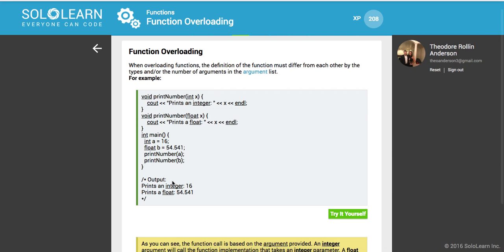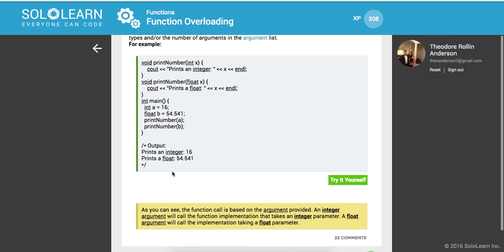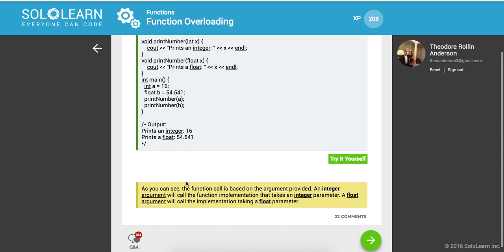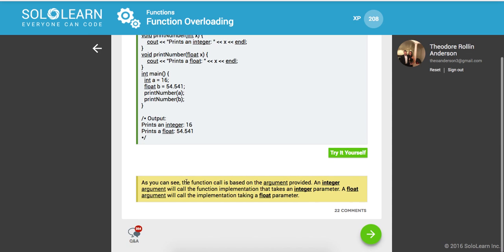So again, just reinforcing that muscle memory. And as you can see, the function call is based on the argument provided. An integer argument will call the function implementation that takes an integer parameter. A float argument will call the implementation taking a float parameter. So the compiler is smart enough to understand which one you want to call based on what you pass in.